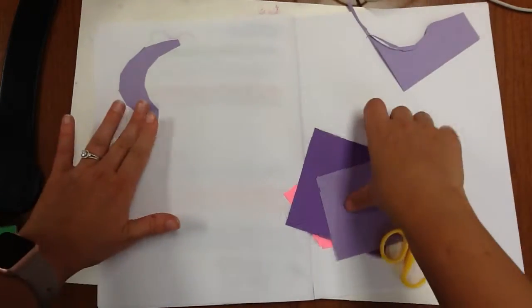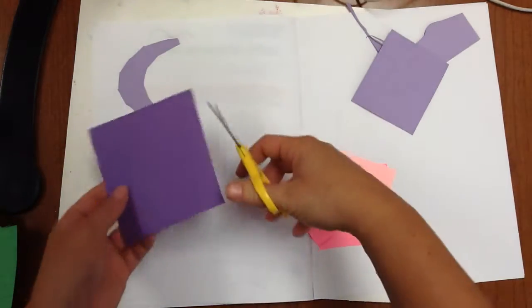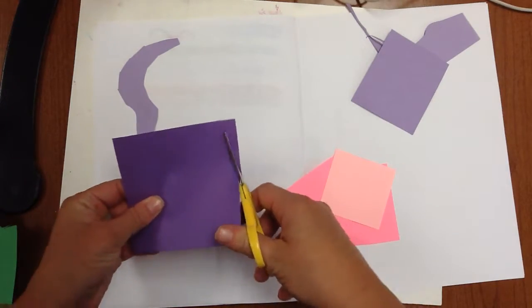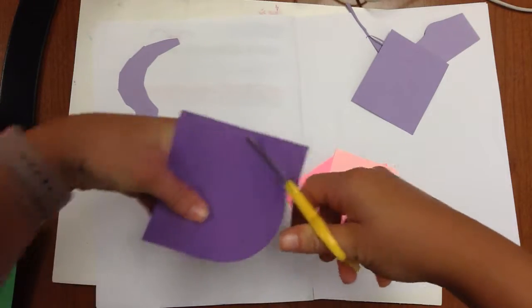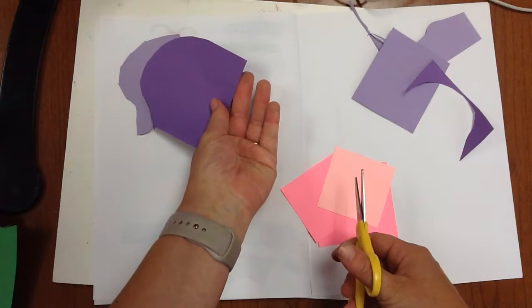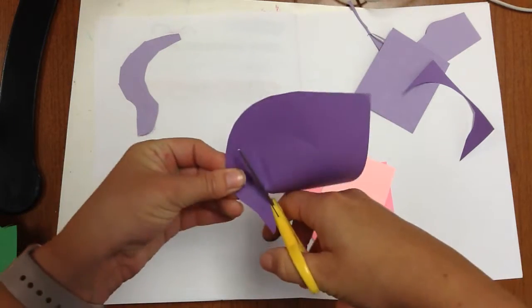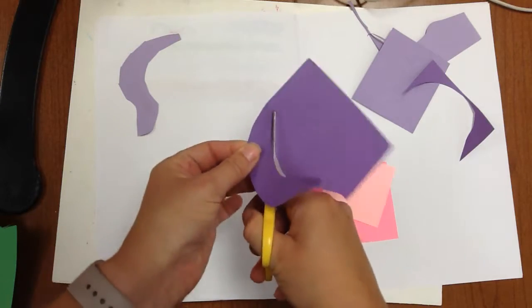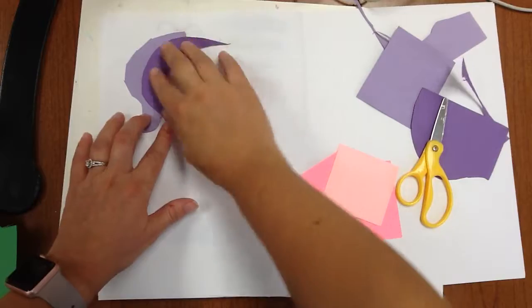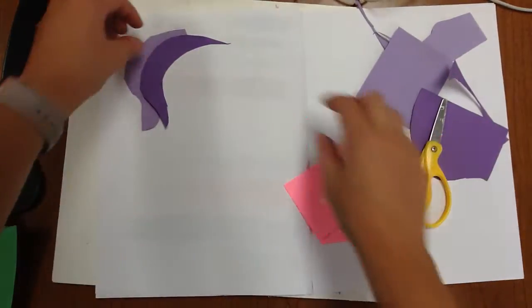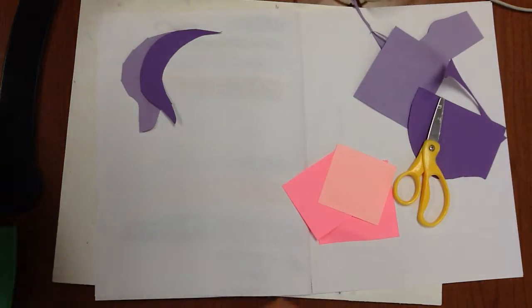You can also layer shapes. So if I'm going to take this, kind of want to make the same shape with it and layer it. See what happens. Kind of the same. And I can glue this right on top of that and kind of get this layered effect.